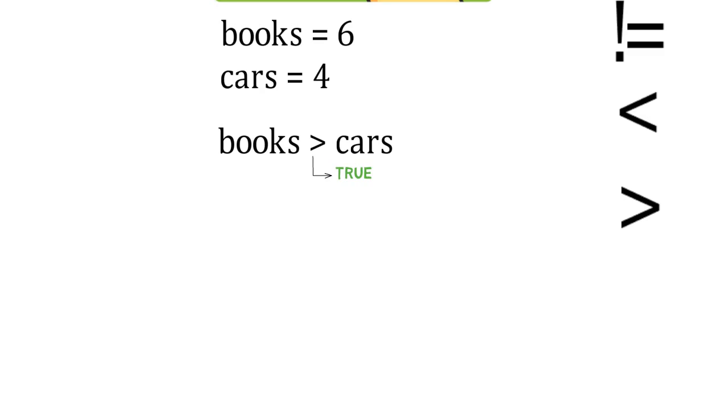and cars represents 4, and 6 is greater than 4. Books does not equal cars. This would also return true because they are not equal to each other.